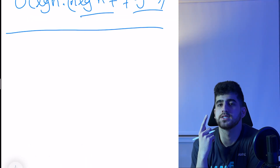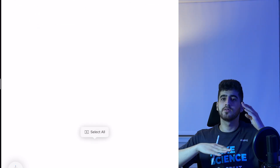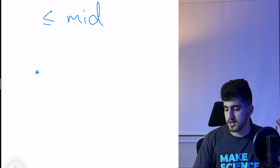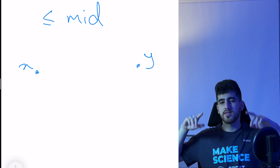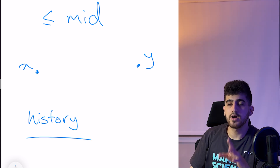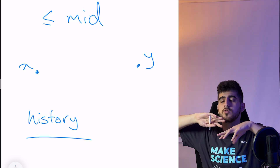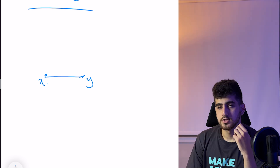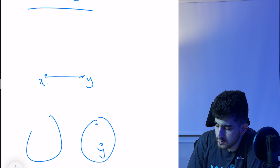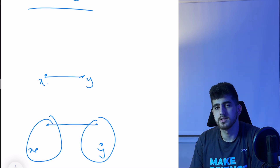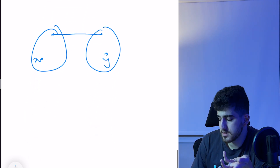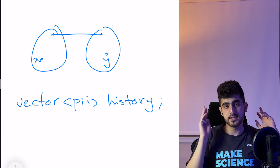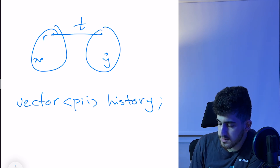The second solution: assume we want to know, if we only consider edges up to mid, whether X and Y are in the same connected component. We run DSU only once and keep a history of all changes. Whenever we merge two vertices — finding the root of each component and making one a child of the other — we record this. For each vertex we maintain a vector of (time, root) pairs representing every root it ever had in DSU.